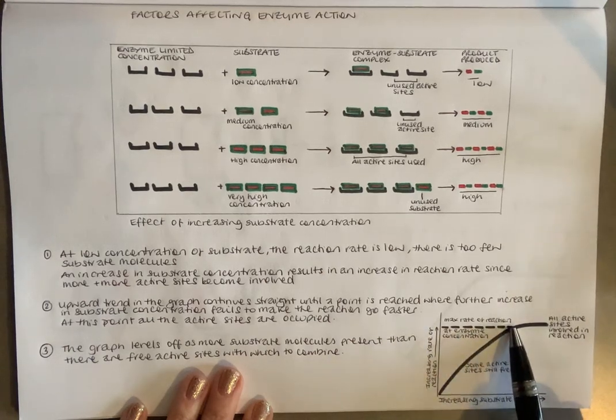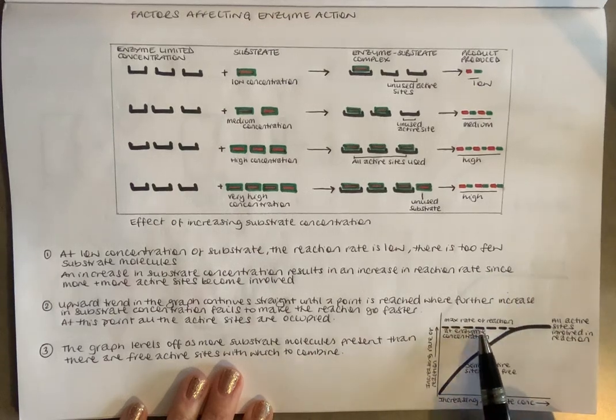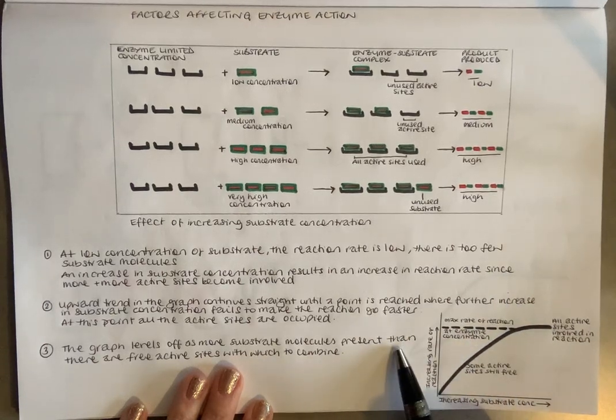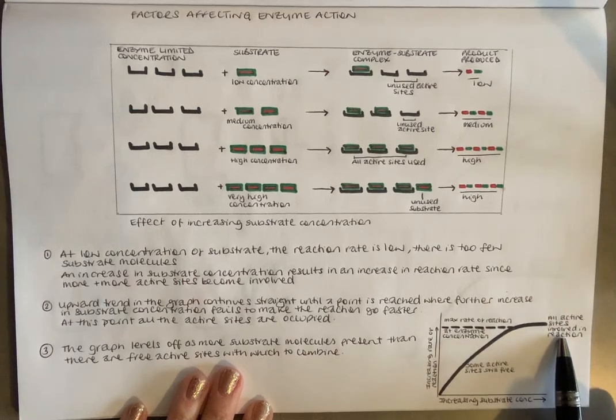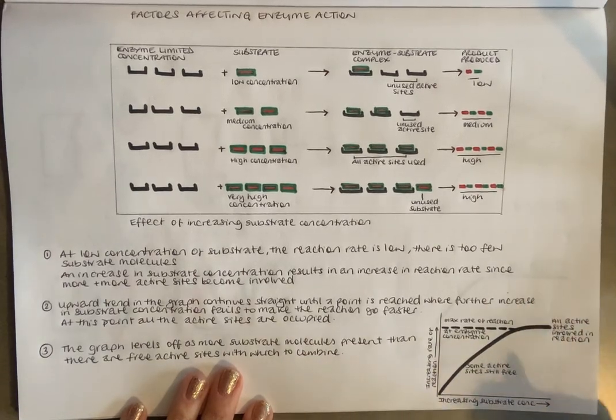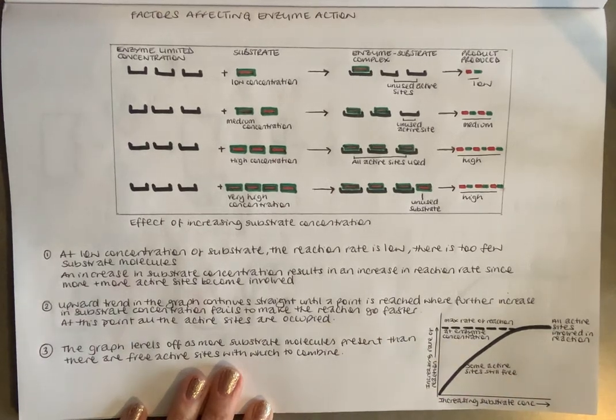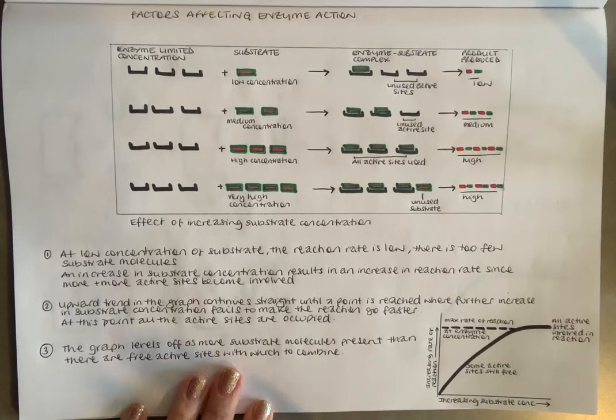But what happens is we get to a point where there is a max rate of reaction, because we basically have so much more substrate than active sites available. You need to balance up the same number of substrate to enzyme. So you could keep on increasing substrate concentration.